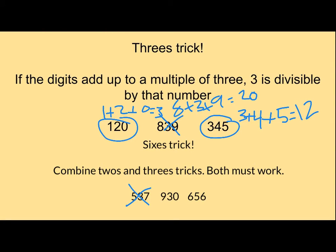So the next one, so far it's so good because it is an even number, so I know the twos trick will work. 9 plus 3 plus 0 is 12, and that is a multiple of 3. So 930 is divisible by 6.